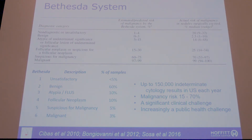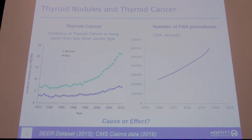We still struggle with Bethesda 3 and 4, and molecular marker technologies are changing how we approach that. We have 150,000 indeterminate cytology results each year in the United States with a malignancy risk somewhere between 15 and 70 percent. Thyroid cancer is projected to become the number one incident cancer within the next 20 years, and the number one prevalent cancer a few years beyond that.